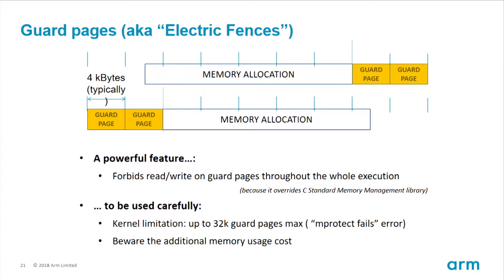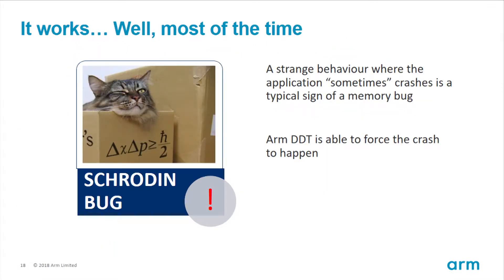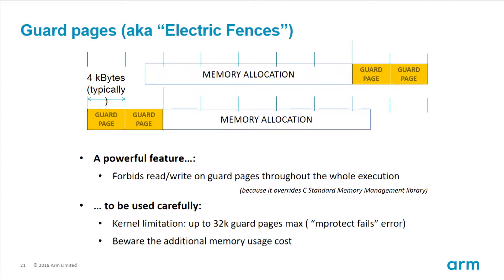Another feature is guard pages, sometimes called electric fences. If you put guard pages around memory allocations, you can detect whenever an illegal access goes beyond the allocation. This is very useful when your program works intermittently. Keep in mind there's a memory overhead cost, so if you're already pushing your memory limits, scale the problem size down before turning on guard pages.